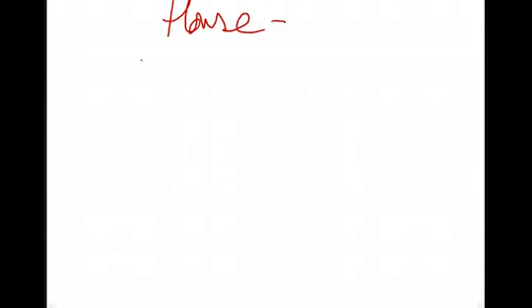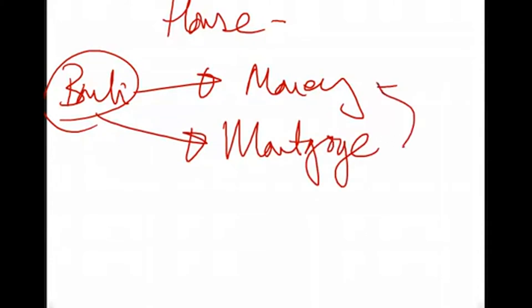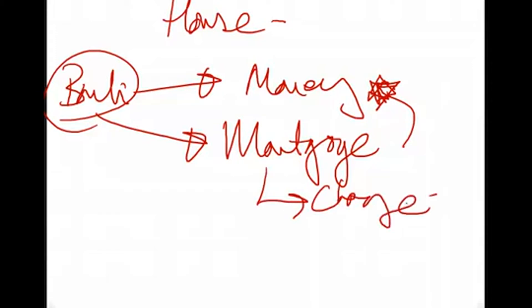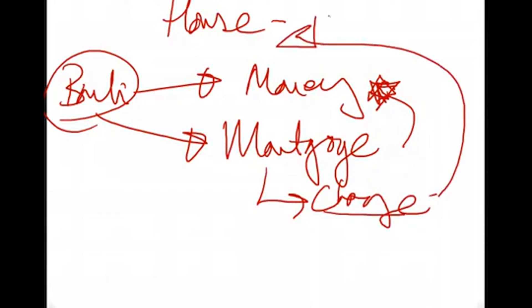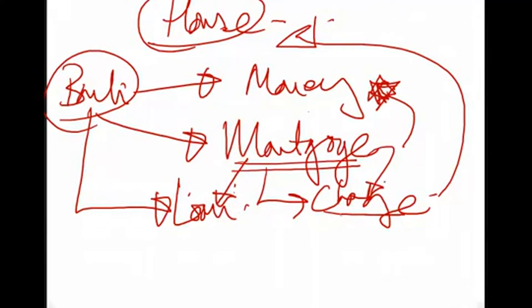You want to buy a house, you go to the bank and say you need money. The bank offers a mortgage. But the mortgage is not the money — the mortgage is a charge, secured on the house. The bank gives you a loan and uses the house as collateral. A mortgage is a legal form of charge on your house, not the money itself.